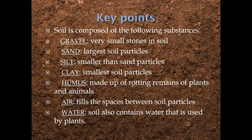Today's key points — Soil is composed of the following substances: Gravel — very small stones in soil. Sand — largest soil particles. Silt — smaller than sand particles. Clay — smallest soil particles. Humus — made up of rotting remains of plants and animals. Air — fills the spaces between soil particles. Water — soil also contains water that is used by plants.